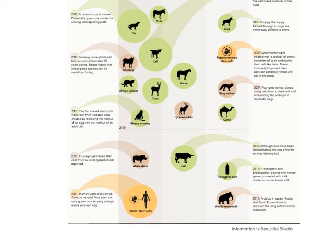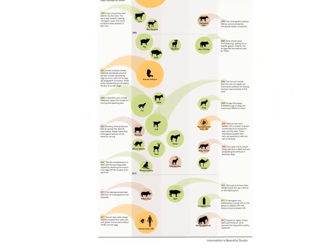In 2011, stem cells from an endangered animal, the white rhino, were reprogrammed. Scientists also created a cow that could produce human milk by inserting human genes. In 2010, a prized fighting bull — typically killed at the end of a bullfight — was cloned so it could be reused. In 2011, human stem cells were cloned from adult skin cells using induced pluripotent stem cells. Researchers also began working on bringing back the woolly mammoth.